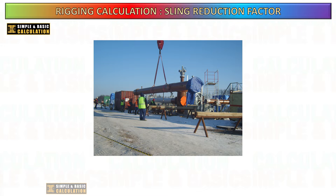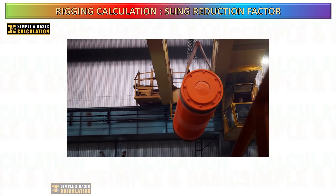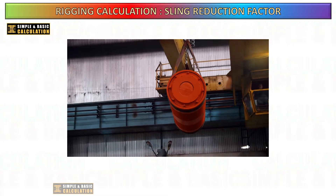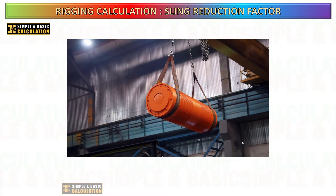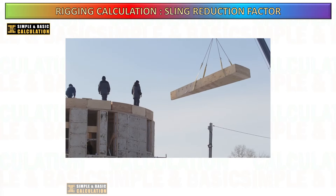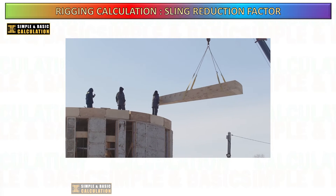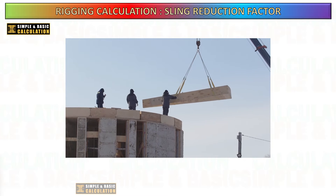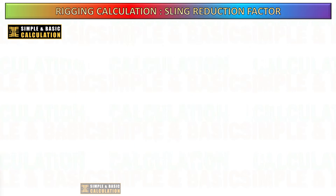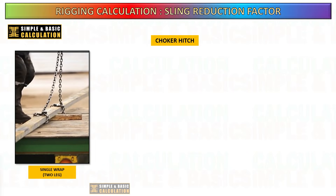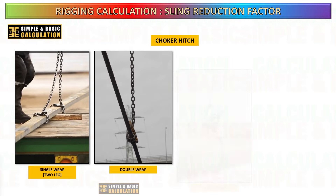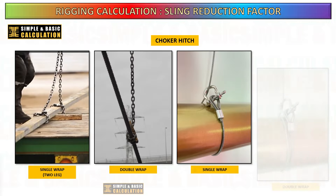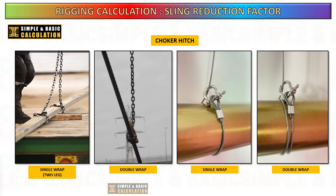When using a sling in a choke configuration — also known as a basket hitch or choker hitch — where the sling is wrapped around the load and then attached to the lifting device, it's important to understand that the capacity of the sling is reduced compared to its vertical or straight lift capacity. In today's video I will show you how to do manual computation of the reduction factor for choker hitches and basket hitches.